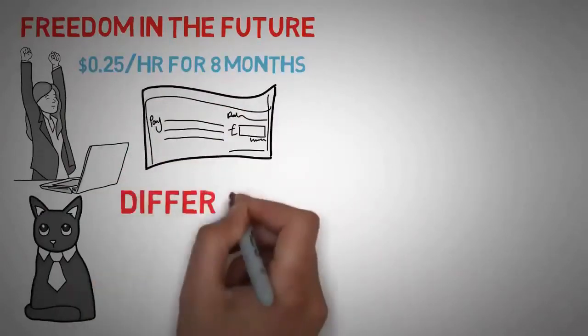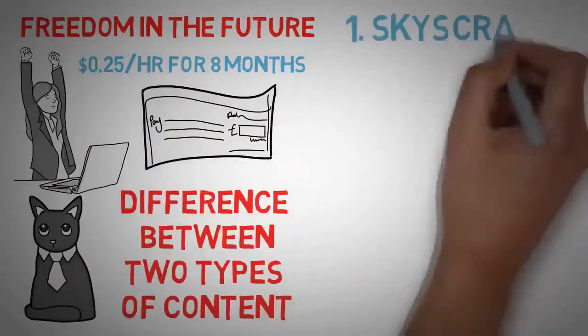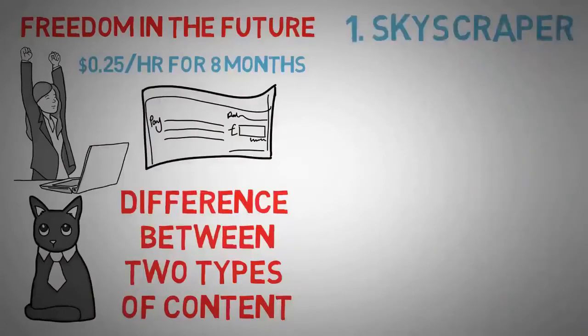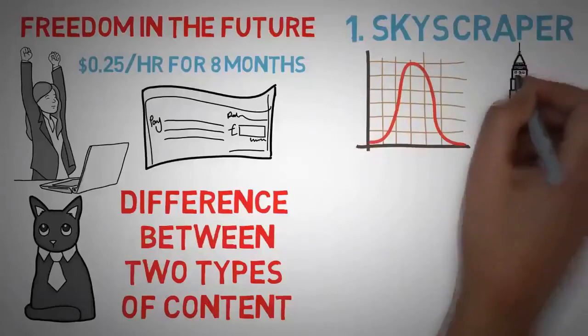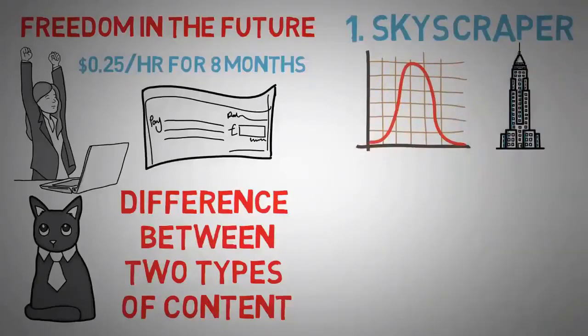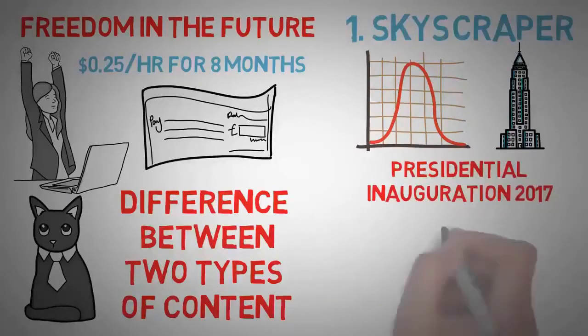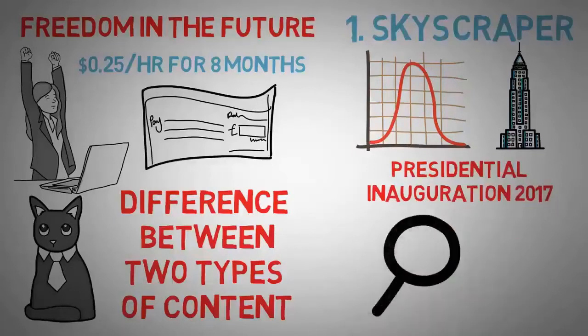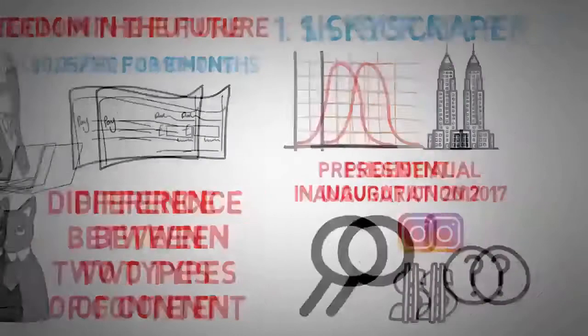I'll show you how much I earned later on in the video. Now you must understand the major difference between two types of content. The first is called skyscraper, and that is because the traffic, the interest, and also the money graph look like a skyscraper - a whole bunch of views and traffic and money for a couple days and then it dies down to just a couple pennies. An example of skyscraper content would be the presidential inauguration in 2017. It's not going to be something someone is searching for 30 to 40 years from now.